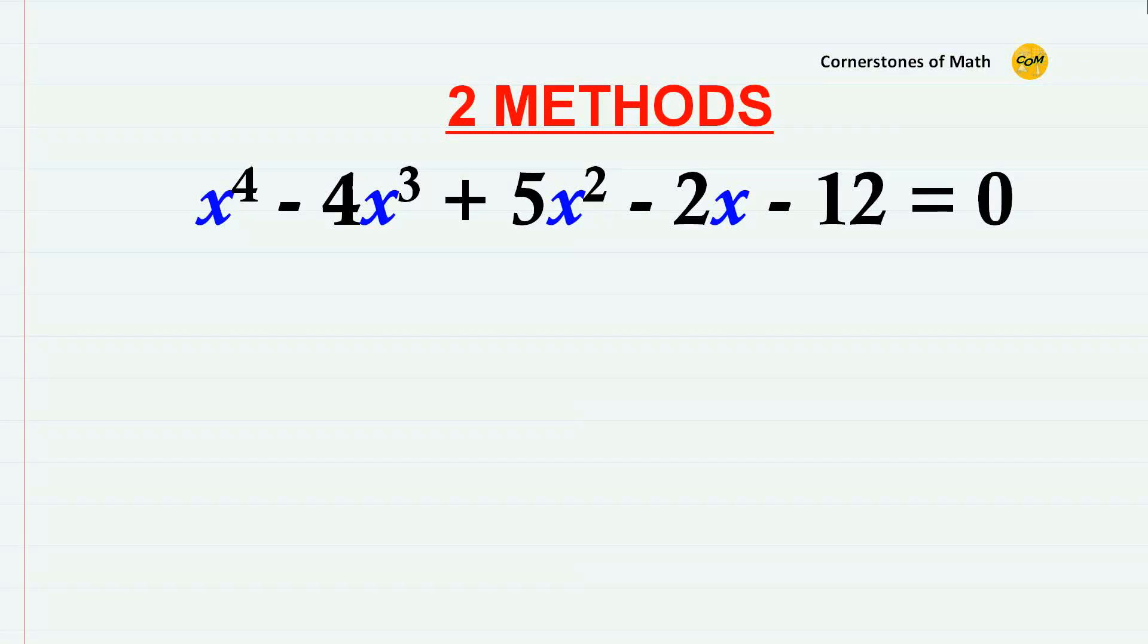Hello and welcome to yet another video of Cornerstones of Math. For today's video, the problem itself is pretty straightforward. We just have to solve the quartic equation x to the power of 4 minus 4x cubed plus 5x squared minus 2x minus 12 equals zero. But to make things slightly more interesting, I will present you two methods that can lead to the solutions to this equation. So let's get started.